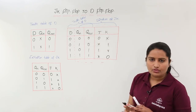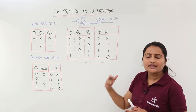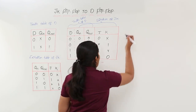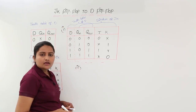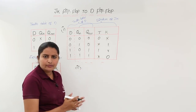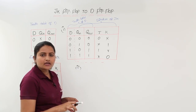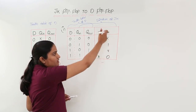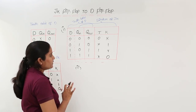Using the conversion table, we make K-maps for the source input variables J and K to get expressions for conversion. Since we are converting from JK to D, we need equations for J and K in terms of D. A 2-variable K-map is needed with variables D and Q(n).